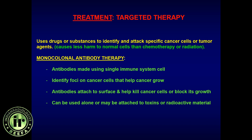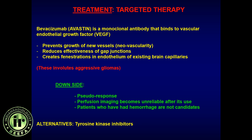Targeted therapy includes agents like Avastin, which go after specific factors promoting tumor growth. Avastin targets VEGF, preventing new vascularity, reducing the effectiveness of gap junctions, and creating fenestration in the endothelium of existing brain capillaries. When Avastin is given, the tumor appears to disappear on imaging — but this is a very false sense of safety and requires very close monitoring.